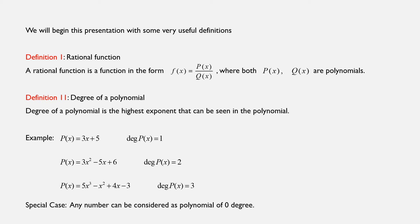Definition number two: Degree of a polynomial. By degree of a polynomial, we mean the highest exponent that can be seen in that polynomial. For example, given the polynomial p(x) equals 3x plus 5, its degree would be equal to one. Given p(x) equals 3x² minus 5x plus 6, the degree would be two, and in 5x³ minus x² plus 4x minus 3, the degree would be three. Keep in mind that any number can be considered as a polynomial of zero degree.